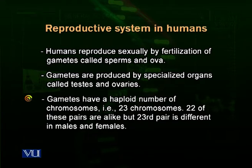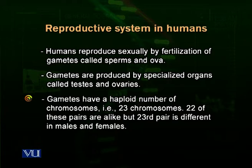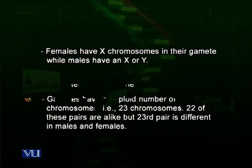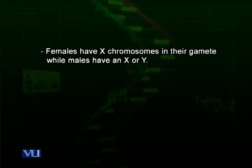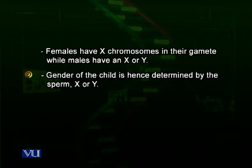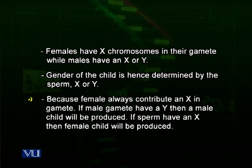22 of the chromosomes are alike, but the 23rd is different in males and females. Females have 22 autosomal chromosomes and an X chromosome. Males are called the heterogametic sex because some of their gametes carry 22 autosomes and one X, while others carry 22 autosomes and one Y. So females always contribute an X, while males contribute either an X or a Y.